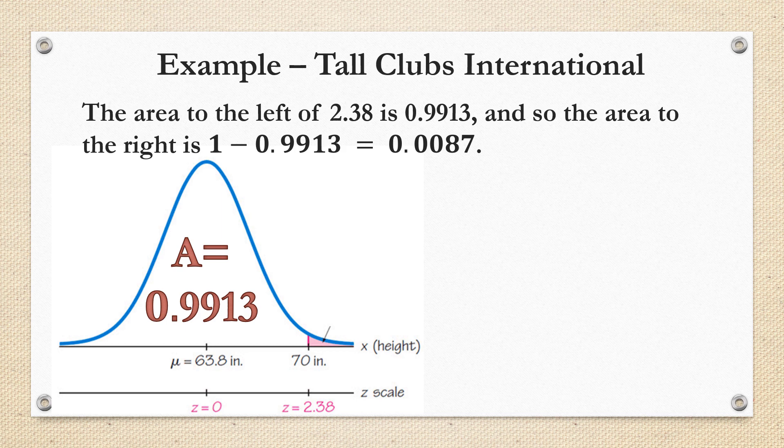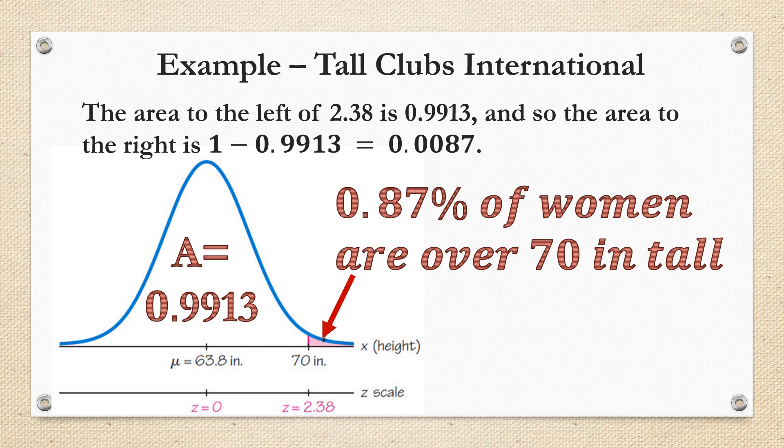1 minus 0.9913 is 0.0087. Or if we want a percentage, move the decimal place two places to the right, we have 0.87% of women are over 70 inches tall.